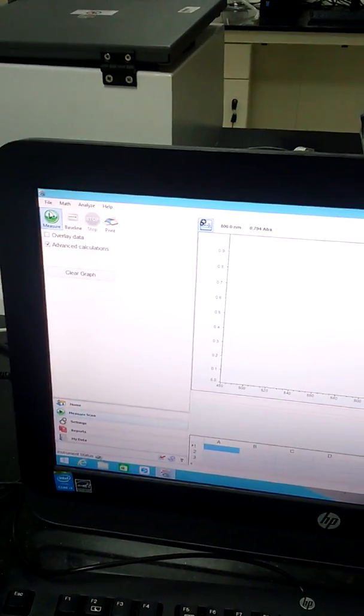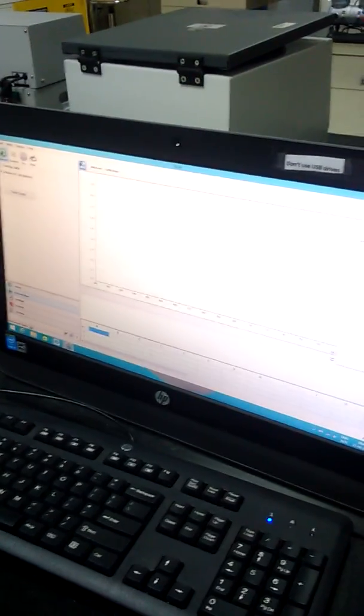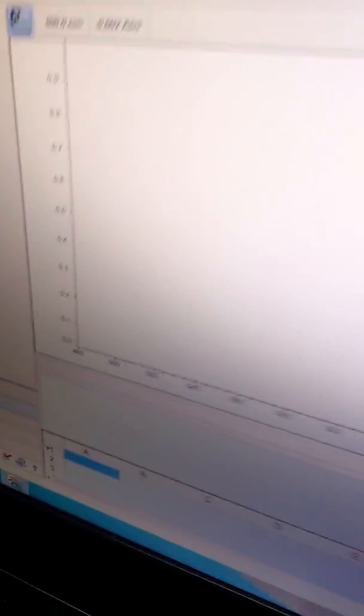Before taking UV, record baseline. Record the UV-Vis spectrum from 480 nm to 800 nm.